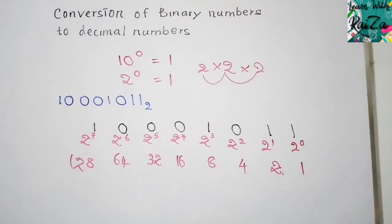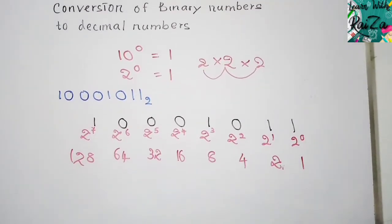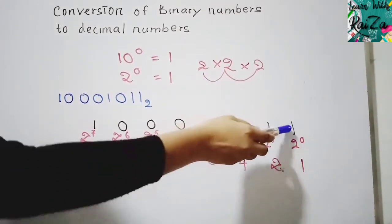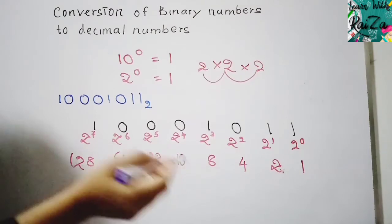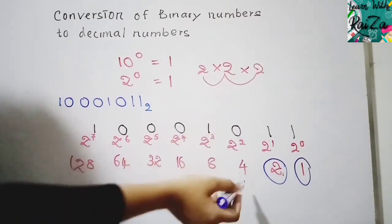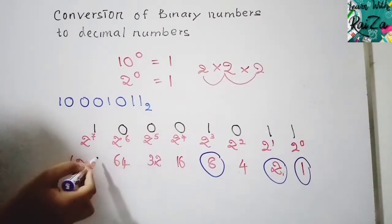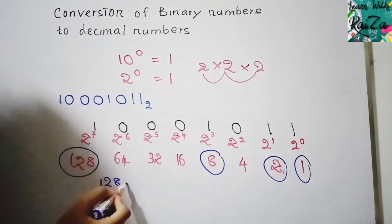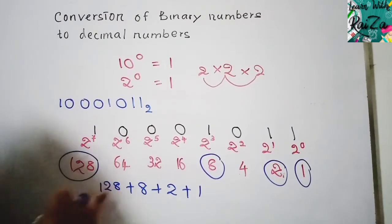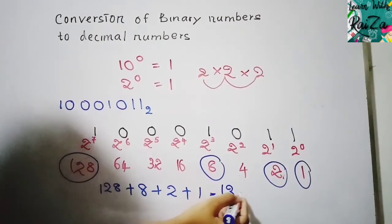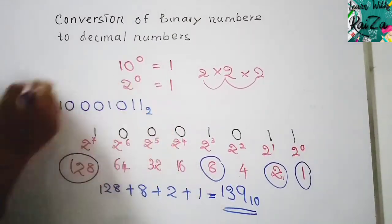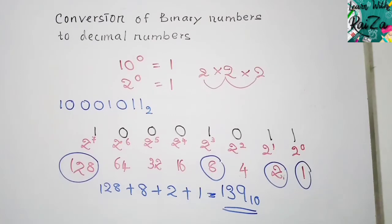Write down the power values and identify which positions have a binary 1. Only those values are considered; positions with 0 are in the 'off' mode and are skipped. Adding the selected values: 128 + 8 + 2 + 1 = 139. So 139 to the base 10 is the decimal answer for that binary number.